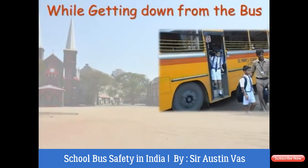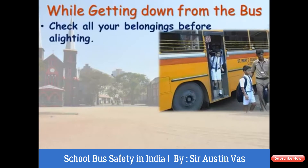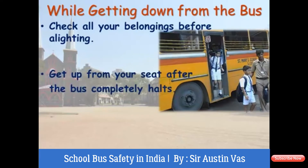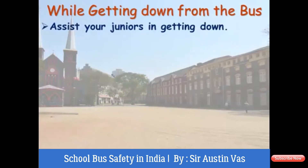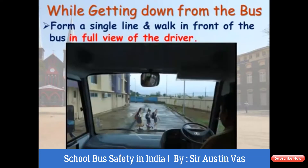The next stage is while getting down from the bus, whether it is in the morning in the school campus or while getting down at your bus stop in the evening on your way back home. Check all your belongings before alighting. Get up from your seat after the bus completely halts. Do not wait near the door, because it would obstruct the other children behind you from getting down. Assist your juniors in getting down from the bus. Very important: form a single line and walk in front of the bus in full view of the driver, so he knows that unless they cross the road, he must not start the bus.